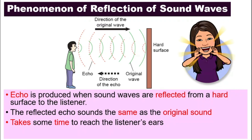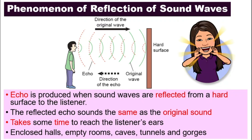It will take some time for the sound to travel back to our ears. That's why there is a delay before we hear it back. The sound needs to travel towards the hard surface — the green wave is your original wave and the pink one is the reflected wave coming back to you. So it takes time to reach the listener's ears. Echo can happen in enclosed halls, empty rooms, caves, tunnels, and gorges.